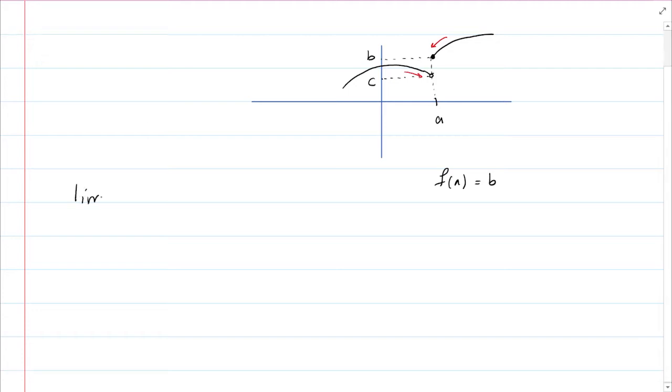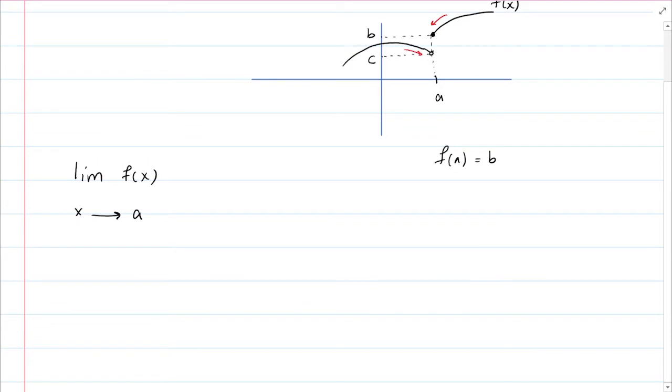For example, if I ask you to find limit of f of x as x approaches A, the question you would ask me then is, okay, what do you mean? What information are you looking for? Because the behavior of the function on the right side of A is different than the behavior of the function on the left side of A. At that point, I need to specify whether I'm approaching A from the right side, that's when we use a plus, or we're approaching A from the left side, that's when we put a negative.